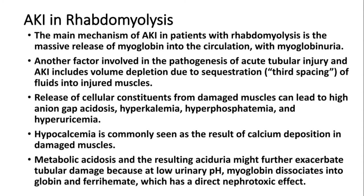Release of cellular components from damaged muscles can also lead to high anion gap acidosis, hyperkalemia, hyperphosphatemia, and hyperuricemia, all of which can contribute to kidney damage. Hypocalcemia is commonly seen due to calcium deposits in damaged muscles. Metabolic acidosis and the resultant acid urine may further exacerbate tubular damage.